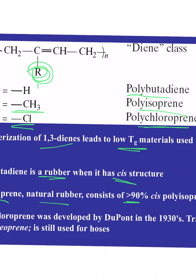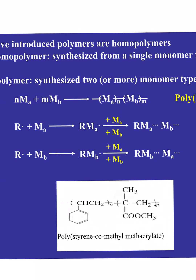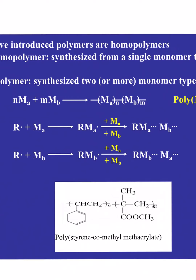Everything seen before are homopolymers — a single monomer type. We also know that copolymers involve two or more monomer types. This gets into more exotic sides of polymer science and plastics production, but involves the same type of breaking open of double bonds with the same type of initiator. Rather than finding the same monomer everywhere, the growing chain finds different monomers and incorporates those into a copolymer structure.